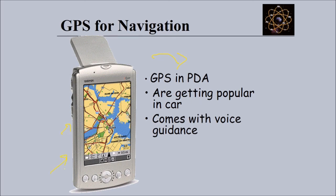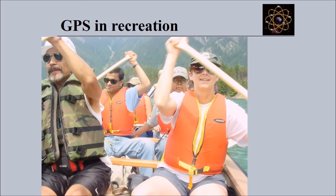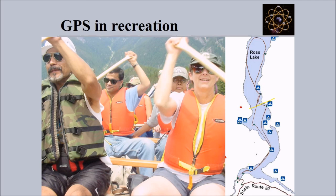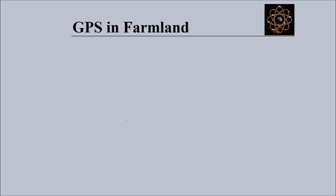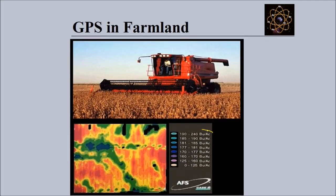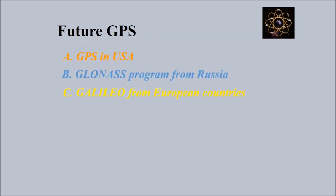GPS is now even in mobile phones, in your watches. They are getting very popular in cars and come with voice guidance. This is GPS in recreation - you know where you are moving around farmland, you can use GPS in farmland.